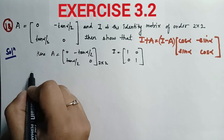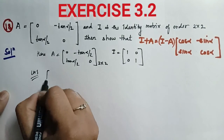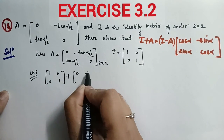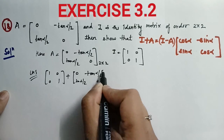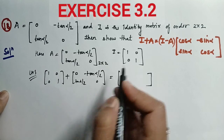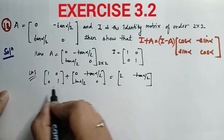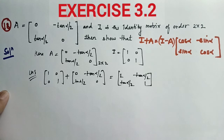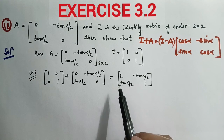We will take LHS first, then move to RHS. For LHS, we need I + A, so writing [[1, 0], [0, 1]] plus the A matrix [[0, -tan(α/2)], [tan(α/2), 0]]. Adding element by element: 1+0=1, 0-tan(α/2)=-tan(α/2), 0+tan(α/2)=tan(α/2), 1+0=1. So the left side gives us [[1, -tan(α/2)], [tan(α/2), 1]].